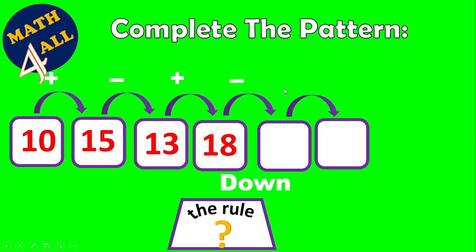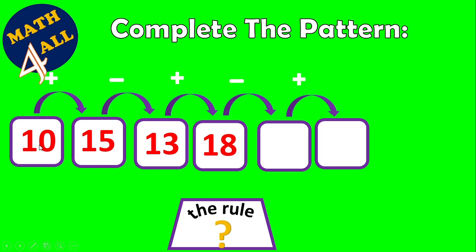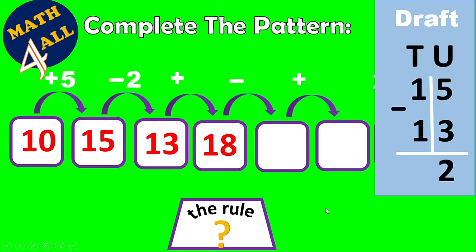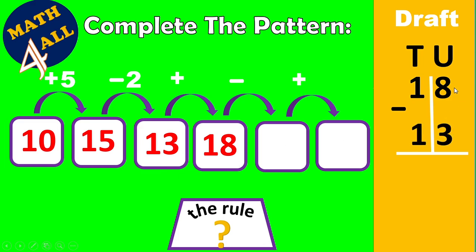The second part: subtract consecutive terms. 15 minus 10 equals 5. 15 minus 13 equals 2. 18 minus 13 equals 5. So the rule is plus 5, minus 2, plus 5.